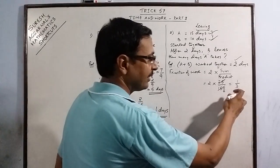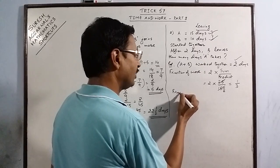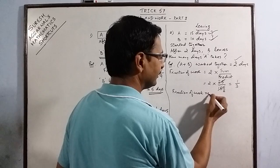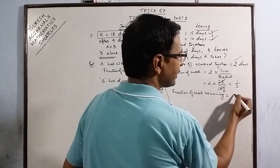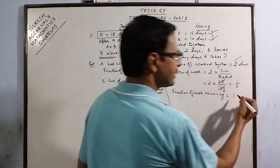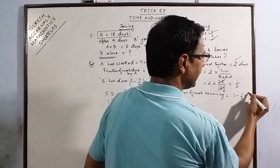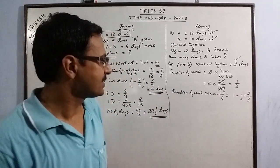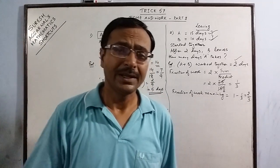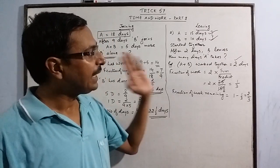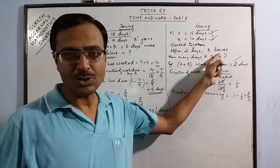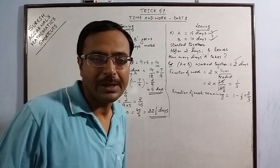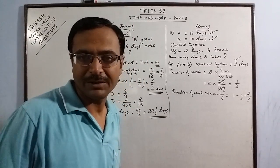Since one-third of the work was complete, we can calculate the fraction of work remaining. The total work is always 1, so the remaining work is 1 minus 1/3, which equals 2/3. This two-thirds of the work is done by A alone, because B has left the job. Now apply the unitary method.